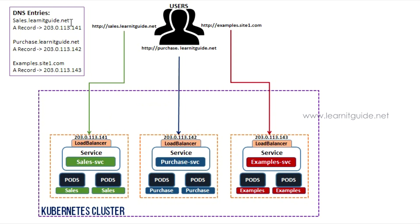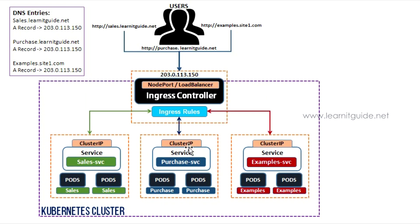You can go to DNS lanattigate.net and create a record — for example, 141 for sales, 142 for purchase.lanattigate.net, and 143 for site1.com. Your DNS result will be mapped to the respective load balancer. This is the setup without an ingress controller.